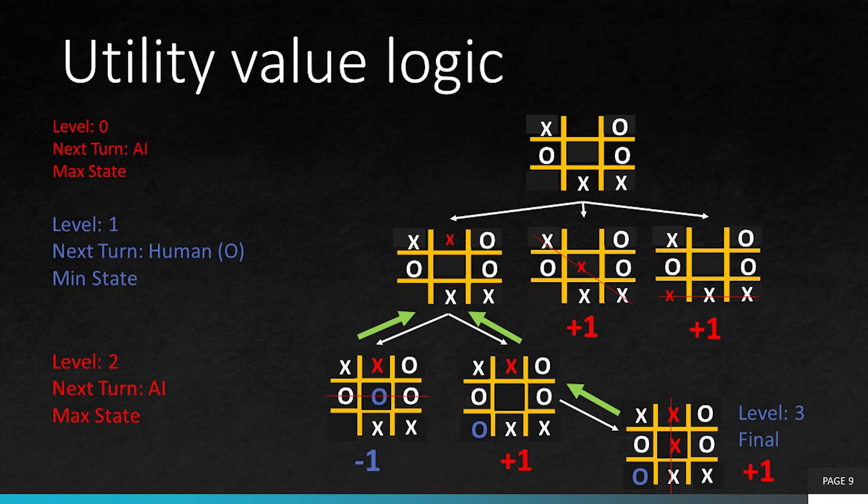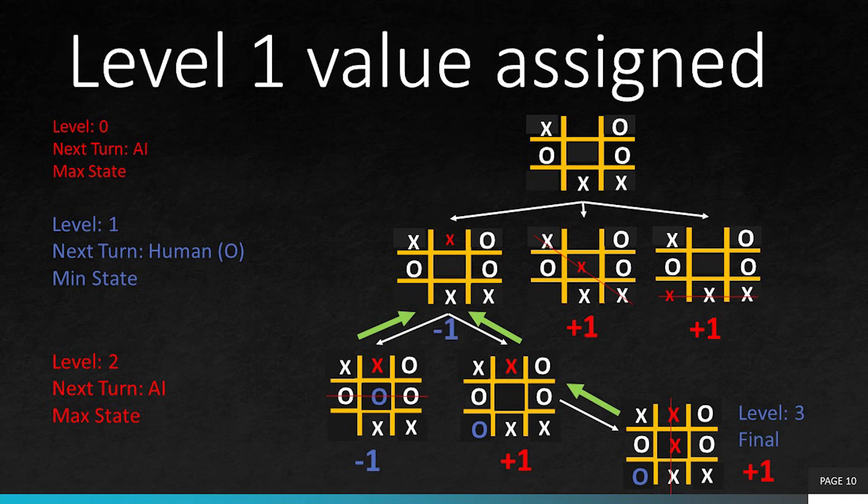Now, level 1 is where the human is playing, which is the min state. So it is not going to take the largest value. It is going to take the minimum value. So the value assigned to the leftover node of level 1 will be minus 1.